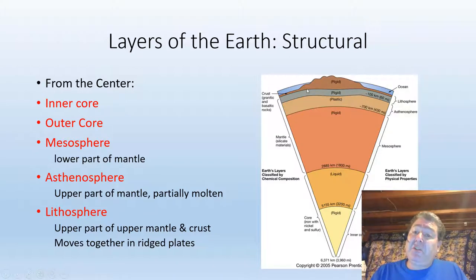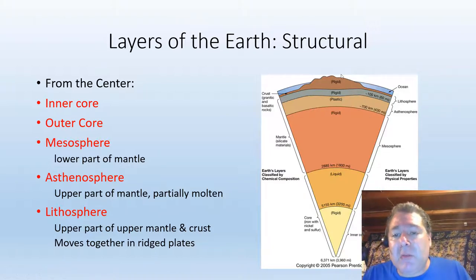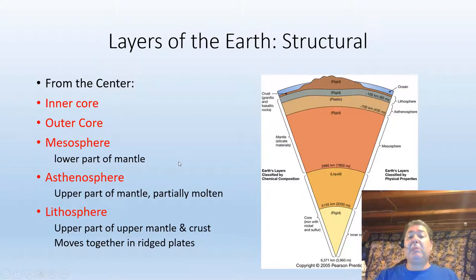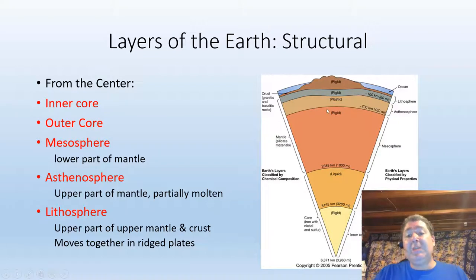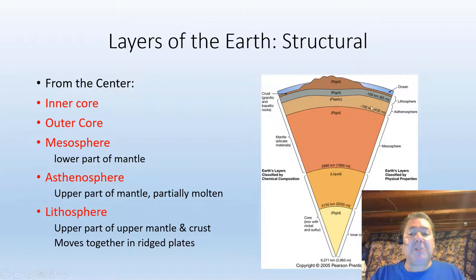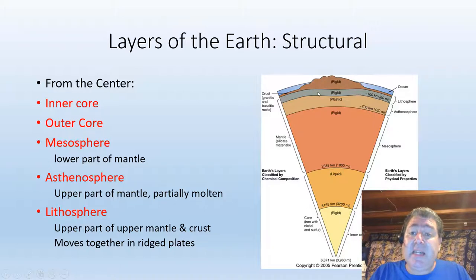The lithosphere is broken into separate plates that move around the Earth. They contain both continental lithosphere and oceanic lithosphere. The reason we break up the Earth's layers in a structural format is that this structure is very important to the process of plate tectonics — the asthenosphere is a plasticky, partially molten, buoyant surface on which the less dense lithosphere rides. Density is everything to plate tectonics.